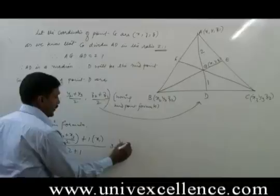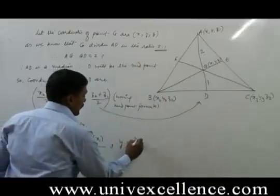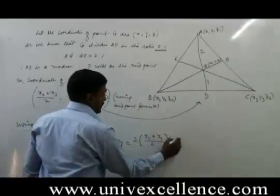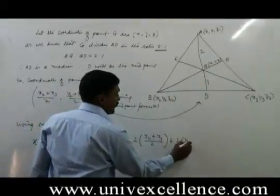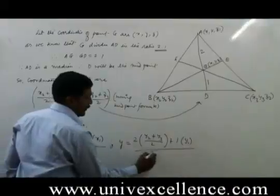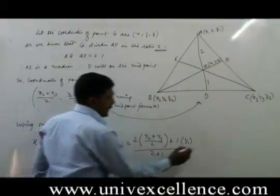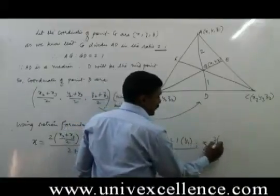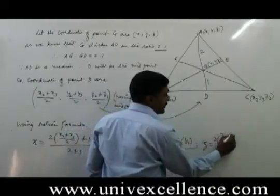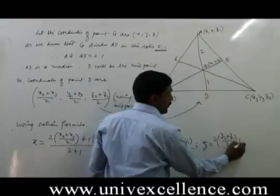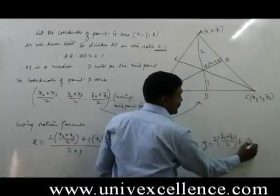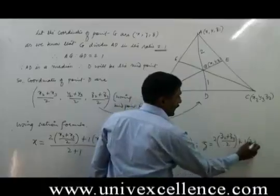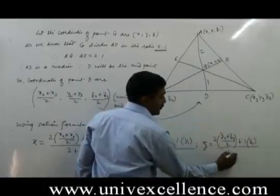Y = [2×(Y₂+Y₃)/2 + 1×Y₁]/(2+1), and lastly Z = [2×(Z₂+Z₃)/2 + 1×Z₁]/(2+1).